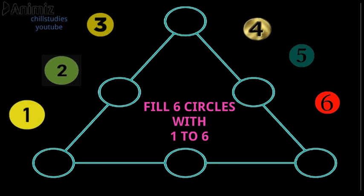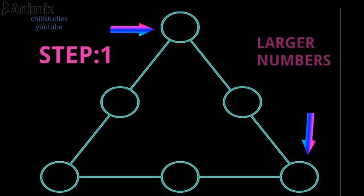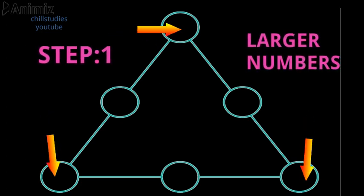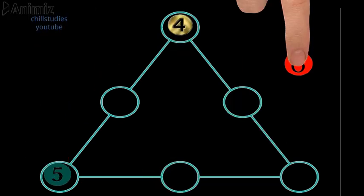Yes, come, let's arrange the numbers from one to six. Step one: place the larger numbers at the corners of the triangle - that is four, five, and six.